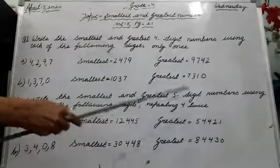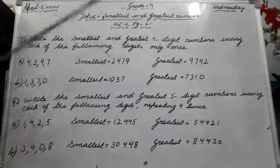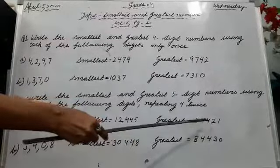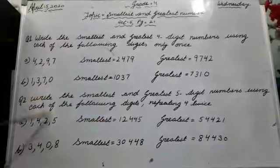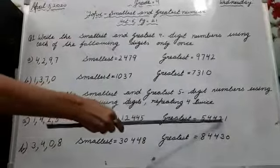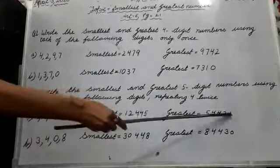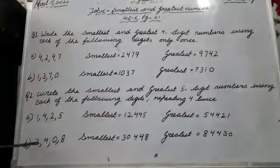Continuing smallest number Part A: after 1 and 2, write 4 — repeating 4 twice, so write 4 two times. Last one is 5. For the greatest number: which is greatest? 5. Write 5 first, then 4 — write 4 two times. Next is 2, then last one is 1. Write 1 in the last place.